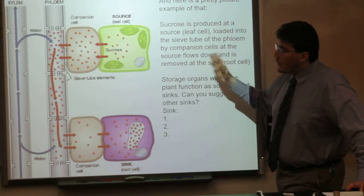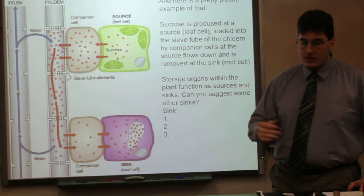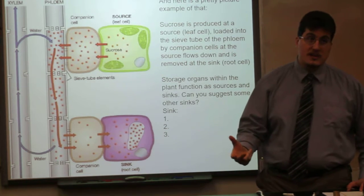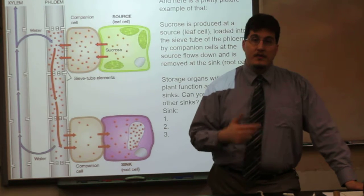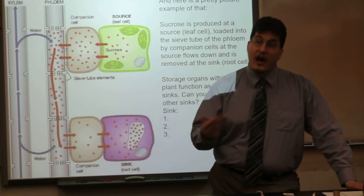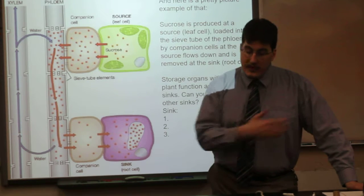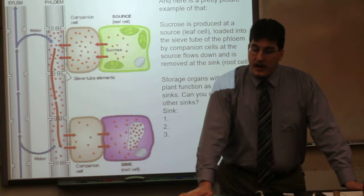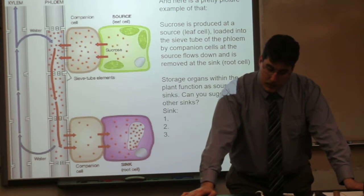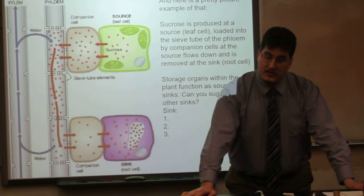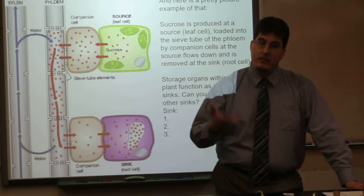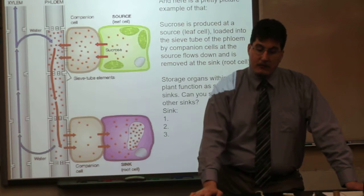The source is not always a leaf cell. The source could also be a root cell in certain circumstances, for example, in the post-winter season, when the plant is regrowing from the died-down root. In herbaceous dicots — annuals that die down to the root at the end of every growing season — they need to regrow from the root into a brand new stem and leaf at the beginning of every growing season.